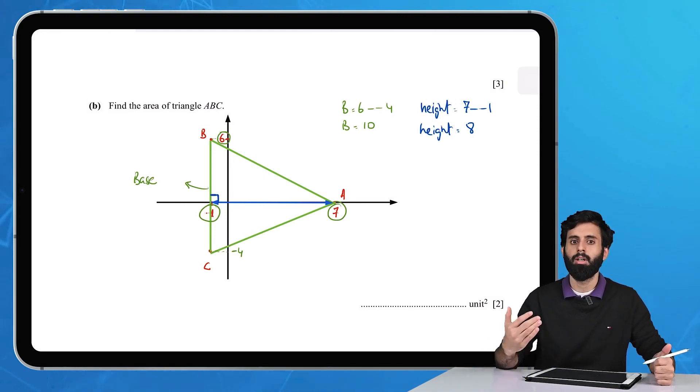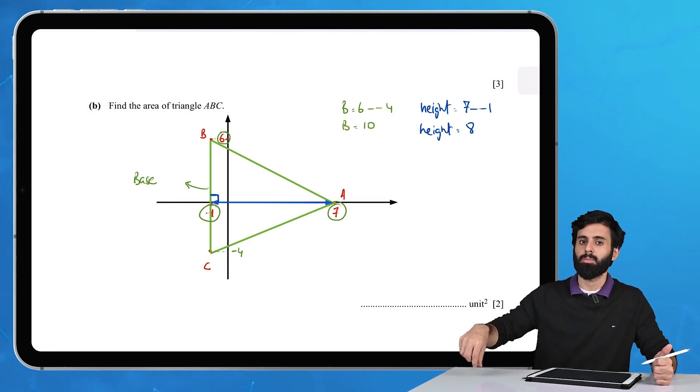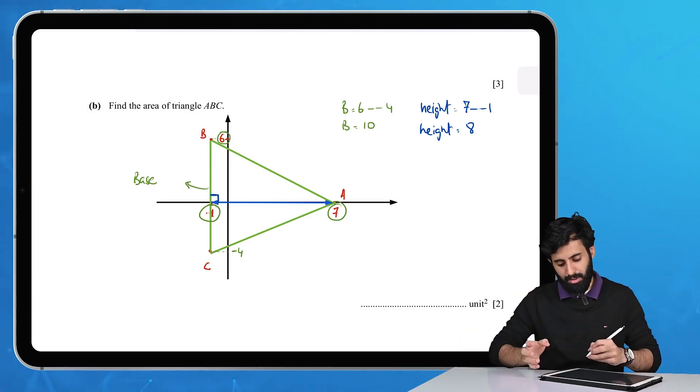If I take length BC as my base, then the perpendicular distance from line BC to point A, which is the highest point, will be the height. Now that you have your base and height sorted out, we'll use the formula: half times base times height.